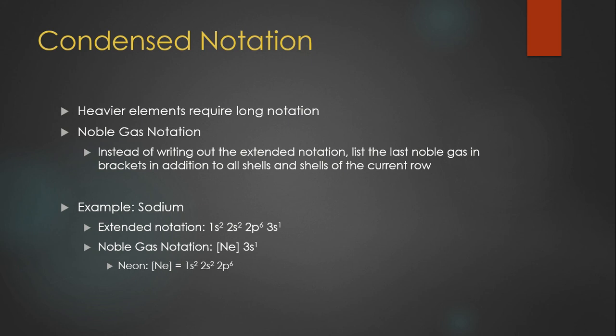We know that neon is 1s squared, 2s squared, 2p to the sixth. So to save writing, instead, we replace all of those with Ne in brackets, which is just the periodic table form of neon. So we have the noble gas notation right there, and then anything else that comes after that we write down.